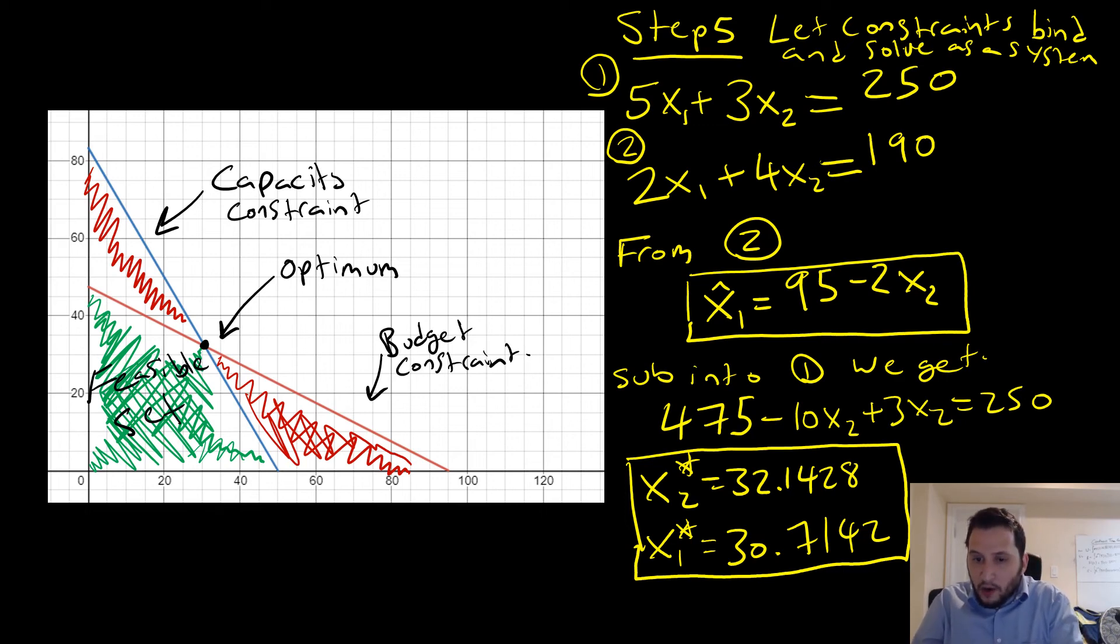And we get a concrete answer, with x2 star being equal to 32.1428, there's more decimal points, and x1 being equal to 30.7142. So this is still handleable from the perspective of our Lagrangian, just that we're not using the first order condition that you would suspect. We don't have to necessarily solve for a direct demand equation to compare things. We first want to see what our solution would be with respect to our first order conditions, with respect to our multipliers.